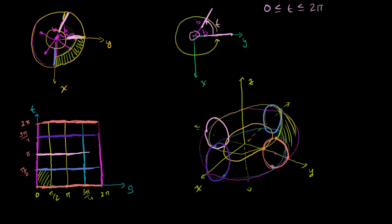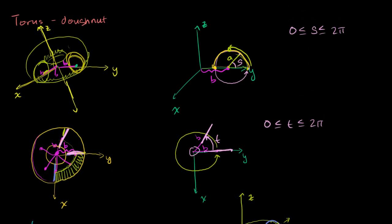In the last video, we started to talk about how to parameterize a torus, or a donut shape. The two parameters we're using — and this is all about visualization, which is really the hard thing to do here — the way we parameterize the surface of a torus is to take a point and rotate it around a circle, picked in the zy plane. How far it's gone around that circle we parameterize by s, where s goes between 0 and 2π. Then we rotate the circle around the z-axis, keeping the center always a distance b away.